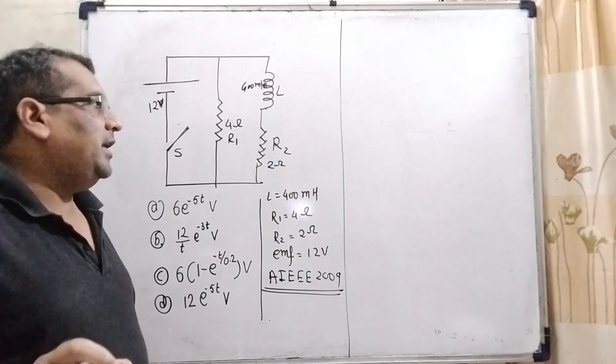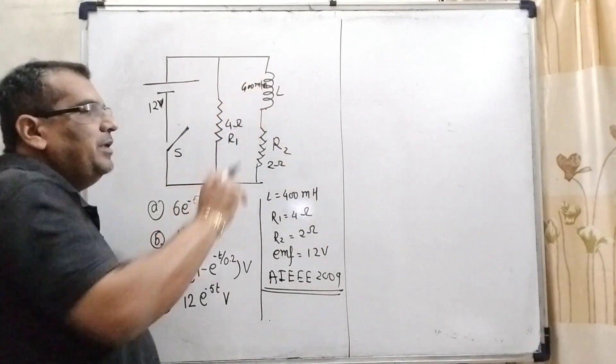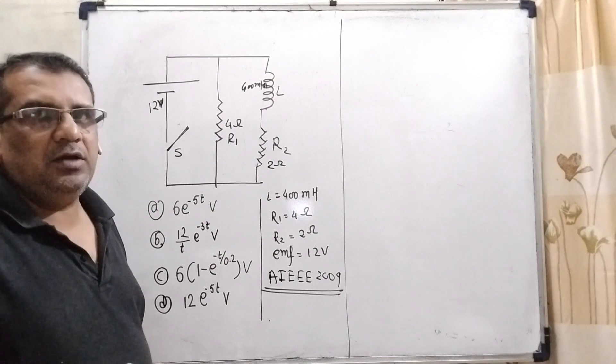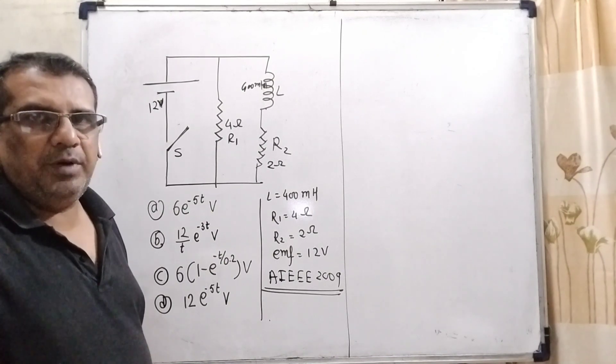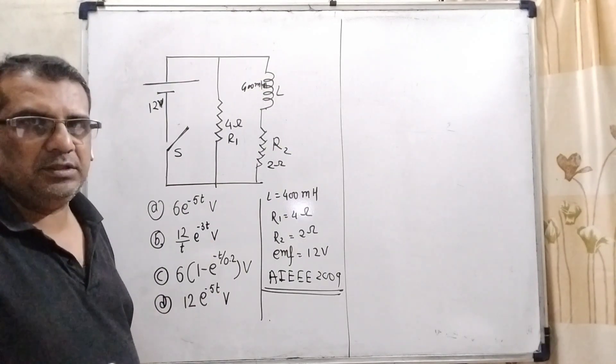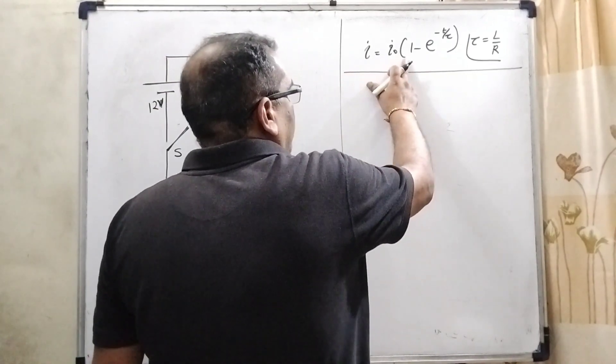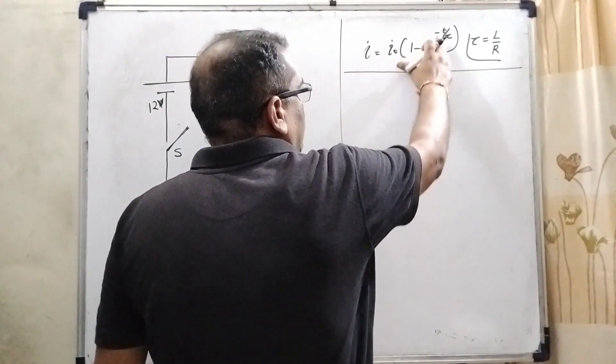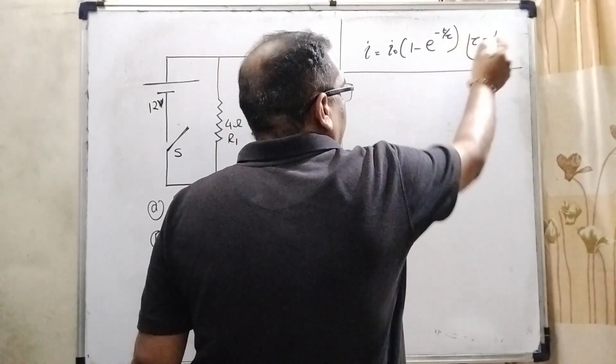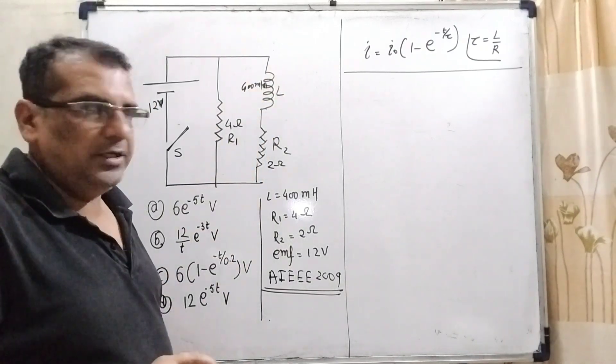And second thing is that when switch S is closed, at that time this inductance L charges. So therefore, we have used the formula for charging. Means I equal to I0 into bracket 1 minus E raised to power minus T upon tau. Here tau is a time constant, and time constant is given by the formula L by R because here we have given the inductor.